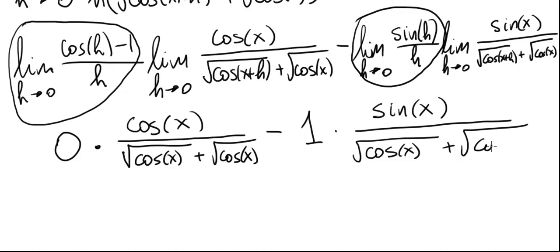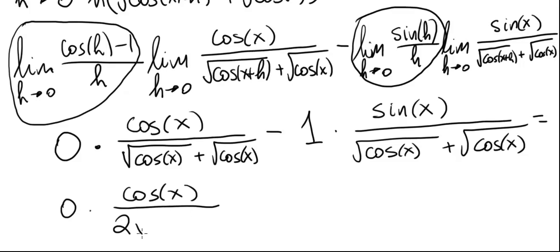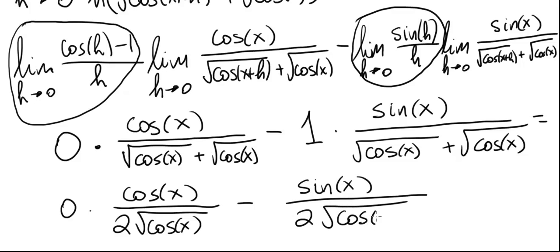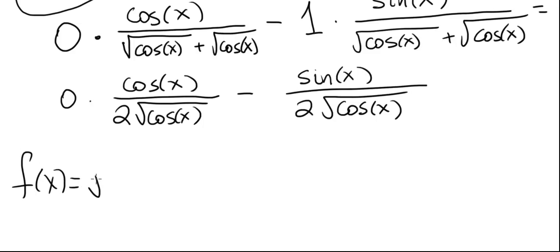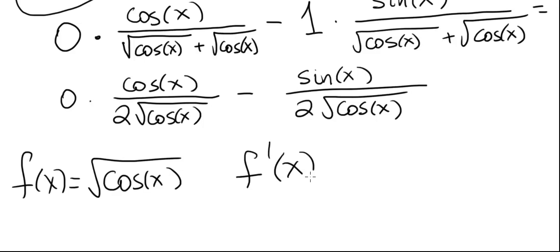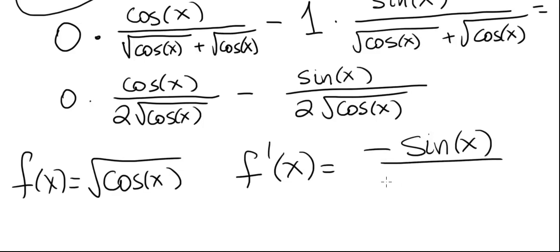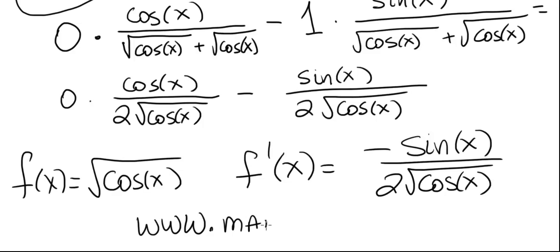Simplifying: zero times cosine of x over 2 times the square root of cosine of x equals zero, minus sine of x divided by 2 times the square root of cosine of x. So the final answer is: if f(x) equals the square root of cosine of x, then by the definition of the derivative, f prime of x equals negative sine of x divided by 2 times the square root of cosine of x. For more videos visit www.mathprepvideos.com.